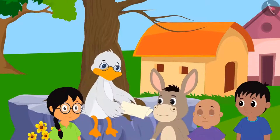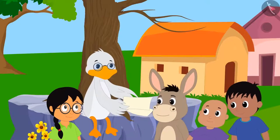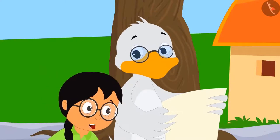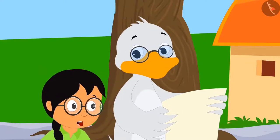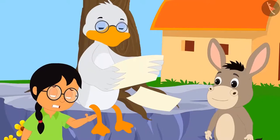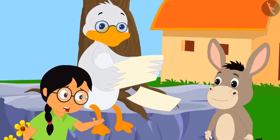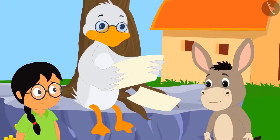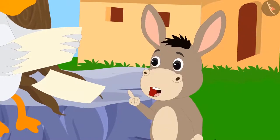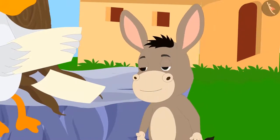'Very good Bola, you have made a very good shape of the kite,' said Badak uncle. 'But how did you manage to make such a perfect shape?' 'The secret of my good shape is a dot grid,' Bola said. 'Dot grid? What is that?'